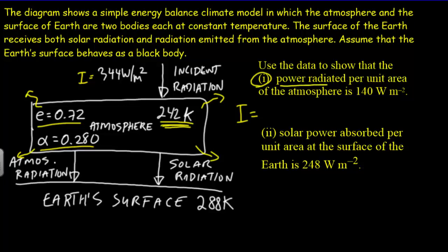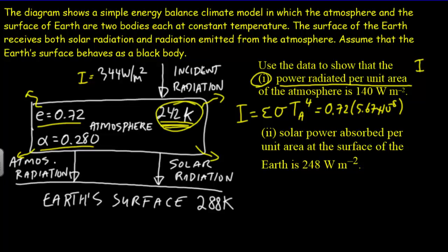The power radiated per unit area is just the intensity of the atmosphere — this should work out to 140 watts per meter squared. It's an imperfect black body radiator, so we take the emissivity times the Stefan-Boltzmann constant times the temperature of the atmosphere in Kelvin to the fourth power: 0.72 × 5.67×10⁻⁸ × 242⁴. That gives an answer of 140 watts per meter squared.